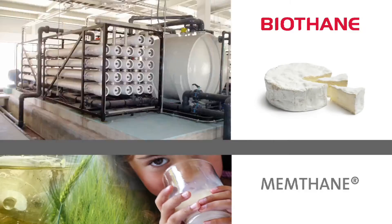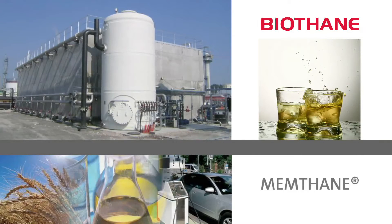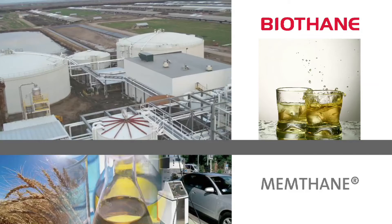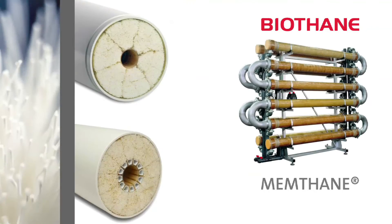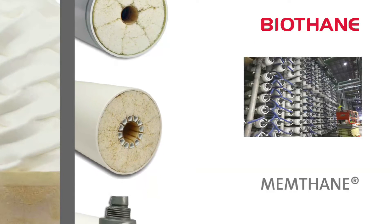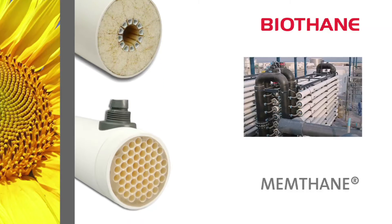Memthane is used to treat waste streams from dairy industries such as whey. Full scale plants are also supplied for stillage and thin stillage from distilleries or bioethanol production. Waste streams containing fats, oil and grease, for example from ice cream production or even biodiesel production are also treated on full scale.